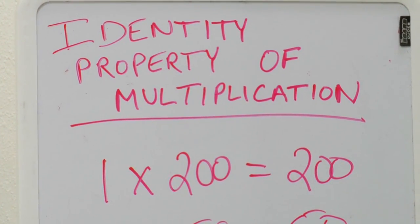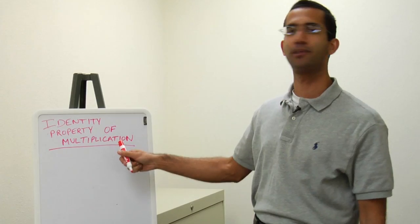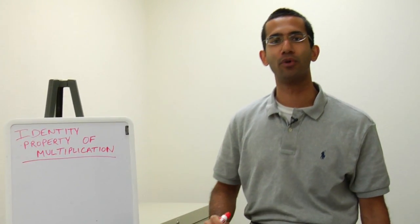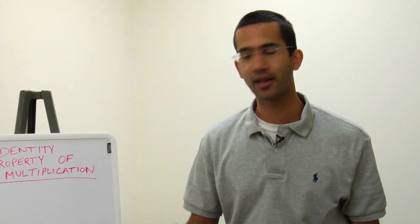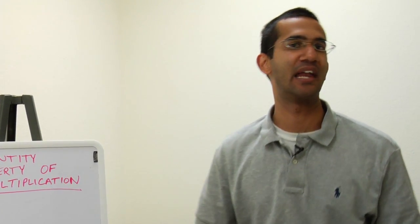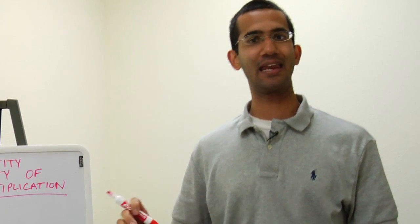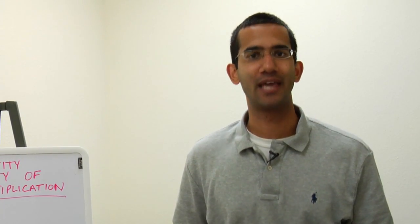Today we're going to be discussing the identity property of multiplication. The definition of the identity property of multiplication is the product of one and any number is that number. When I say product, I mean multiplying that number by one to get that number.